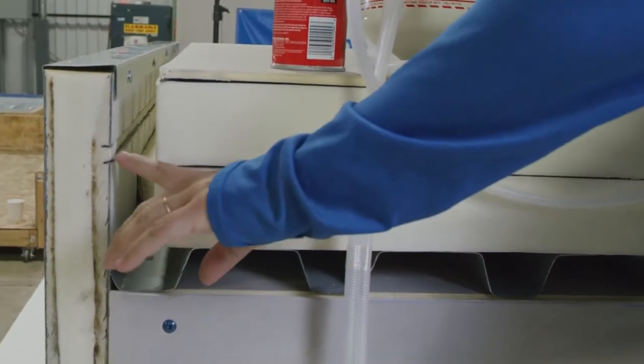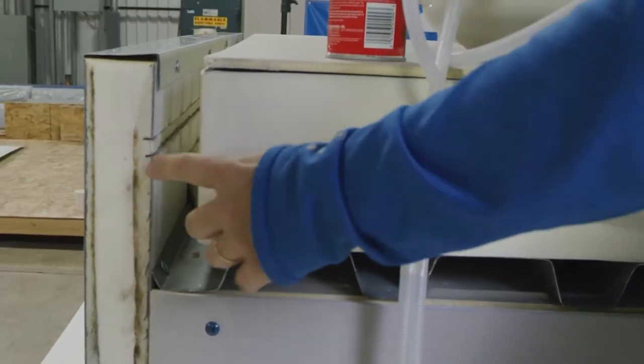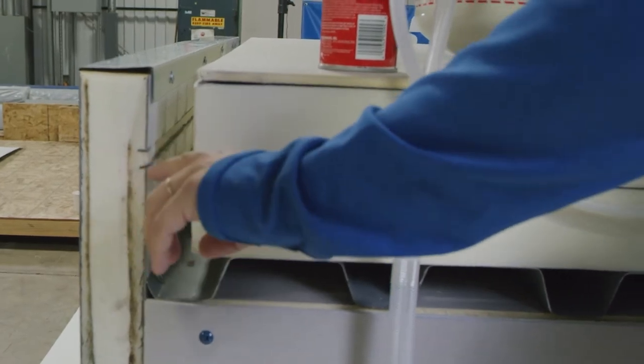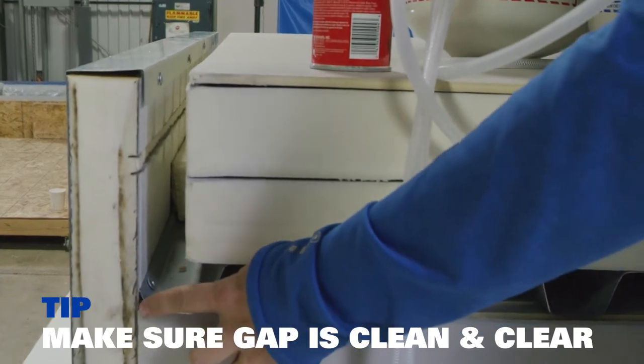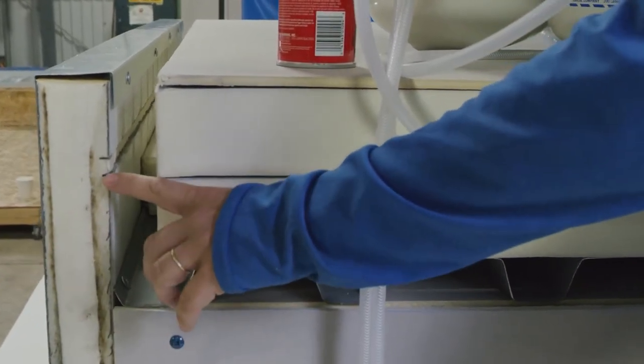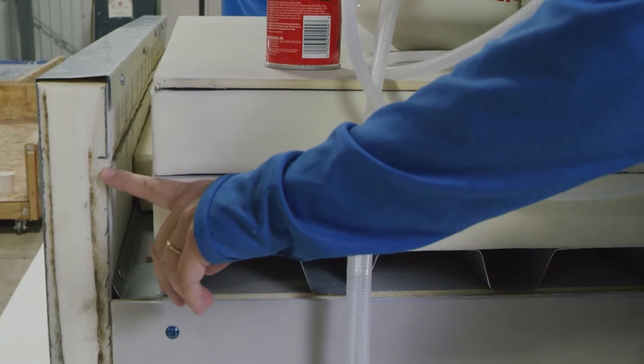And then you can see in here, this is what we call a thermal break. What we've done is we saw cut the metal on the outside of this insulated panel. And what that does is it keeps cold air or cold energy from traveling all the way out to the outside of the building.